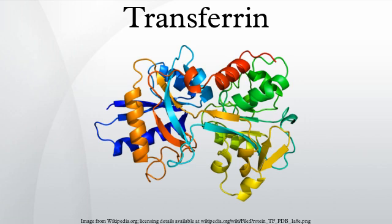Transferrins are iron binding blood plasma glycoproteins that control the level of free iron in biological fluids. Human transferrin is encoded by the TF gene. Transferrin glycoproteins bind iron very tightly, but reversibly.